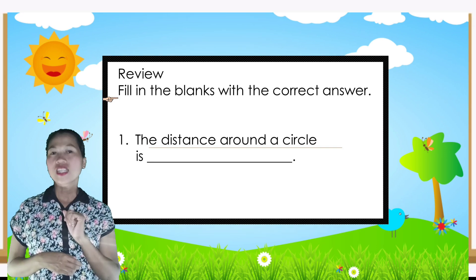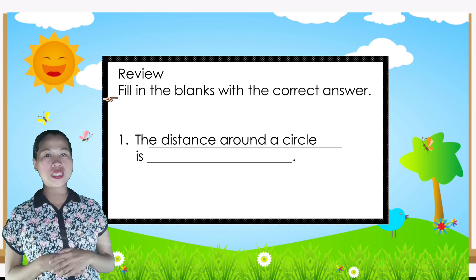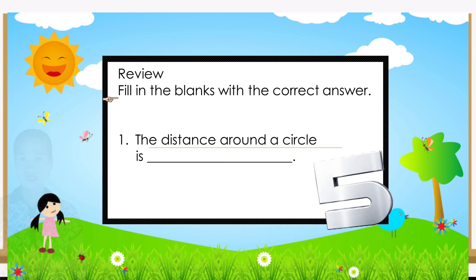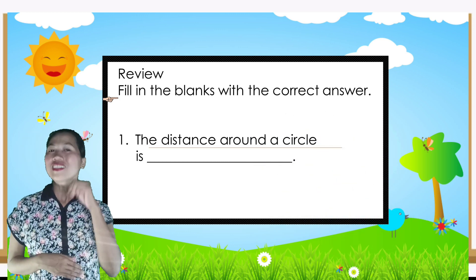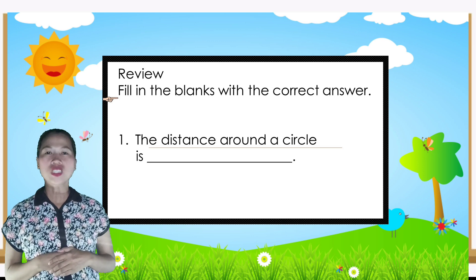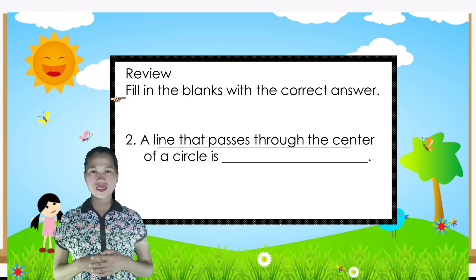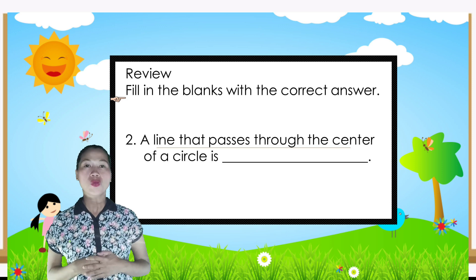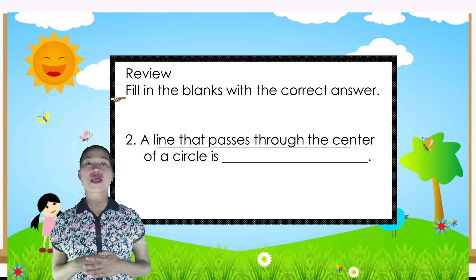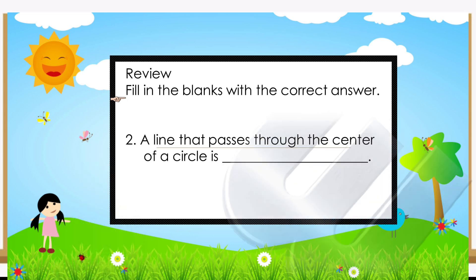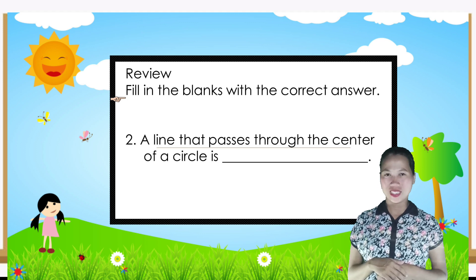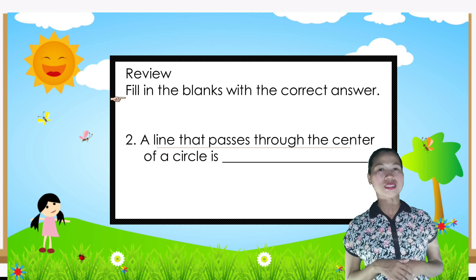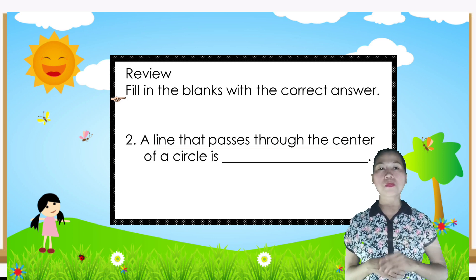The distance around the circle is — the answer is circumference. A line that passes through the center of a circle is — good job, the answer is diameter. Diameter is a line segment that divides the circle into two equal parts.